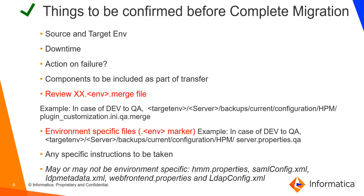For example, if the migration request is from dev to QA, there is a merge file on the target QA environment in the S3 bucket under backups current configuration current folder. If there is a plugin INI file with a URL related to the dev environment, but you need a QA URL on the QA plugin INI file, then verify the plugin INI.QA.merge file on the QA S3 bucket under the current directory. That file specifies any properties that will be replaced after migration. If this merge file is empty, post-migration the plugin INI will have the same content as dev and URLs might still point to the dev environment. So please make sure this merge file is reviewed whenever a complete migration is requested.